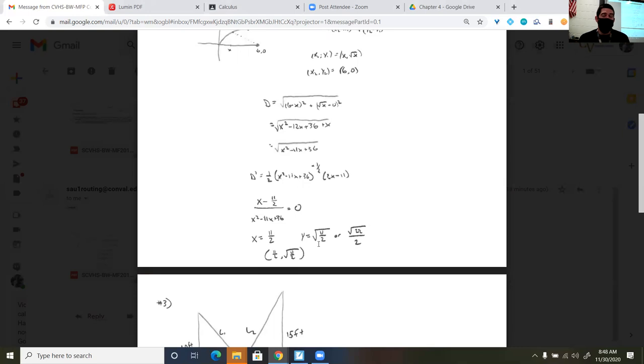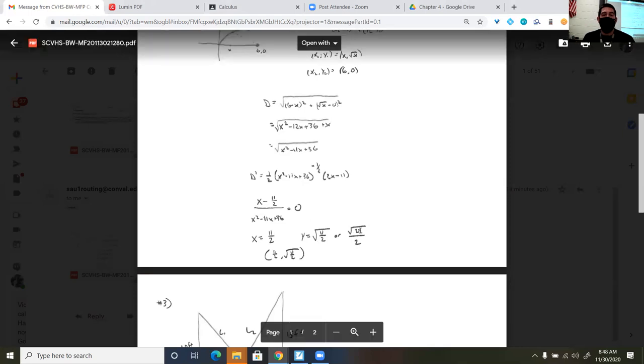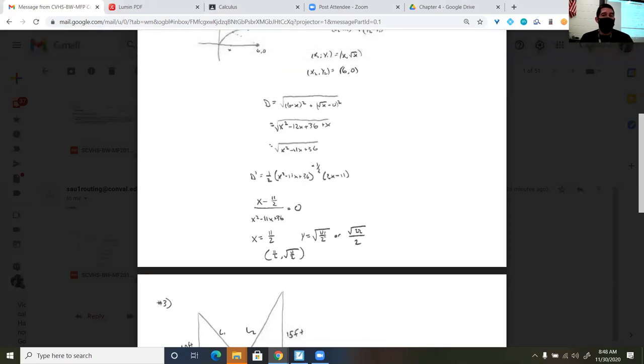So the answer key that's posted, they decided to rationalize that denominator. So they multiplied by the square root of 11 over the square root of 11. And that's what gave me the square root of 22 over 2. So either answer would be fine. It alternates back and forth between you should rationalize and you shouldn't. So I don't really care either way.